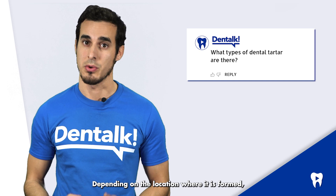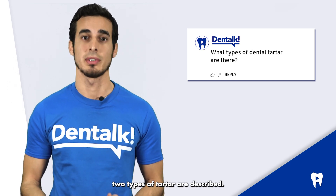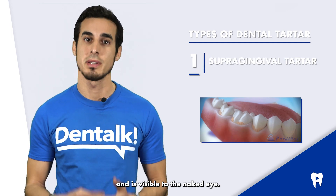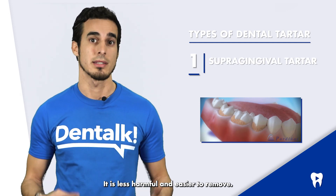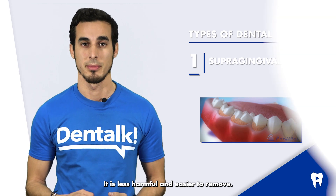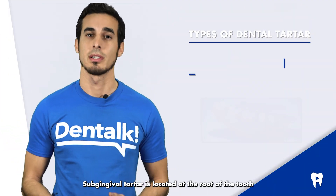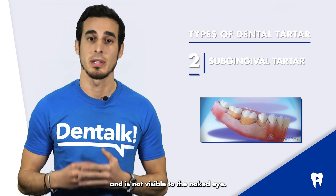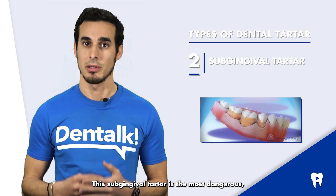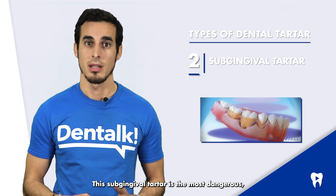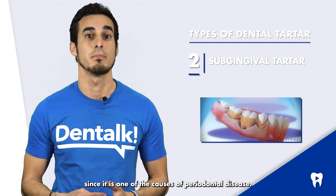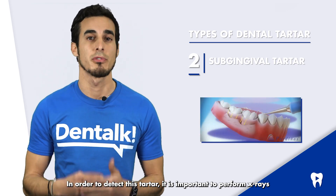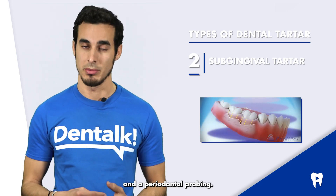Depending on the location where it is formed, two types of tartar are described. Supragingival tartar is located above the gum and is visible to the naked eye. It is less harmful and easier to remove. Subgingival tartar is located at the root of the tooth below the gum and is not visible to the naked eye. This subgingival tartar is the most dangerous, since it is one of the causes of periodontal disease. In order to detect this tartar, it is important to perform x-rays and a periodontal probing.